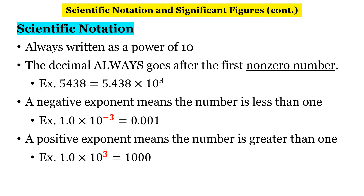Here are the rules for writing out scientific notation. First, it's always written as a power of 10. As you noticed in that previous example, the number was written times 10 to a certain power — it's always a power of 10.